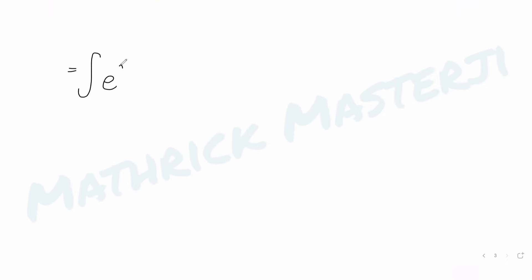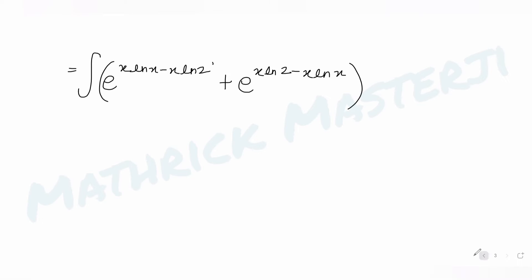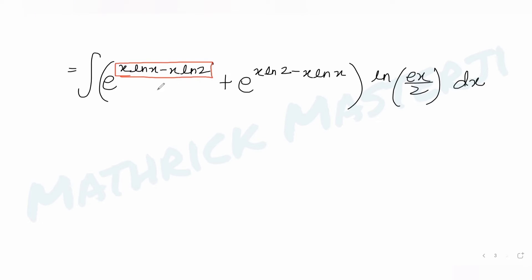So I have the integral of e raised to (x·log x − x·log 2) plus e raised to (x·log 2 − x·log x), times log(ex/2) to the base e, dx. Now I substitute: let t = x·log x to the base e − x·log 2 to the base e.